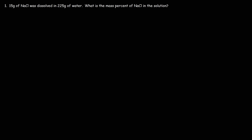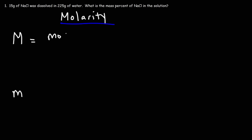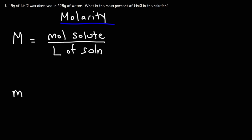The next topic is molarity — spelled with an R. Molarity, represented by the symbol capital M, is equal to the moles of the solute divided by the liters of solution. So it's moles over volume, but the volume has to be in liters, not milliliters.